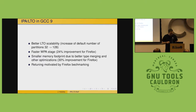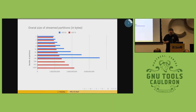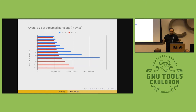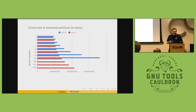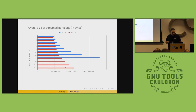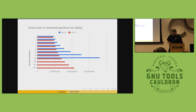Historically we had a problem scaling to a higher number of CPUs, because the bigger the number of partitions you had, the more streaming happens. This is the amount of streaming happening in GCC 8 vs. GCC 9. In GCC 8, the default number of partitions needs to be fixed — it cannot depend on the number of CPUs, because otherwise builds will not be reproducible.